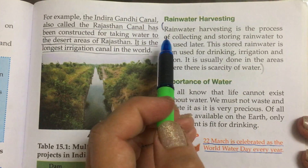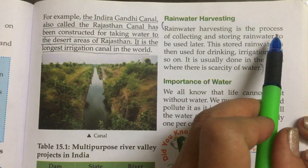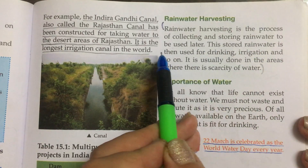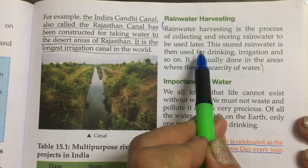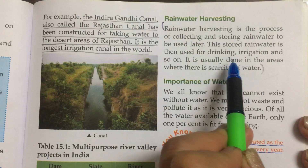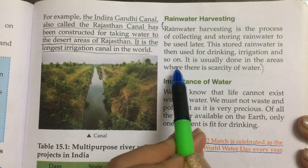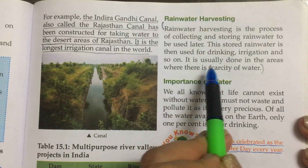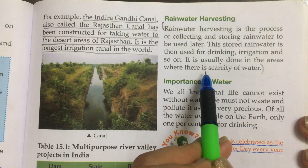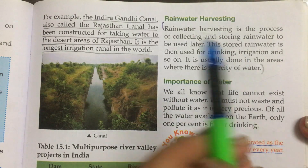Rainwater harvesting is the process of collecting and storing rainwater to be used later. This stored rainwater is then used for drinking, irrigation and so on. This is usually done in areas where there is scarcity of water.